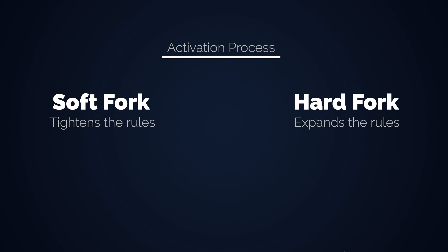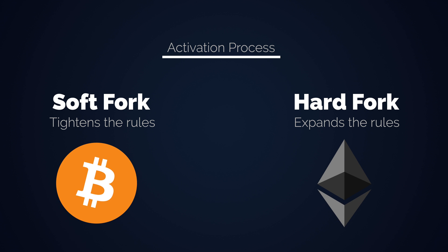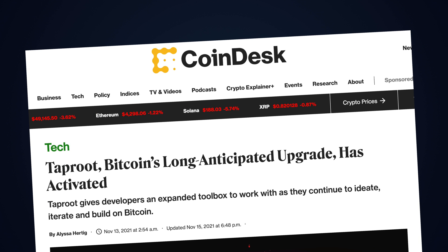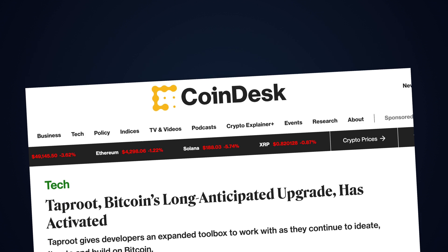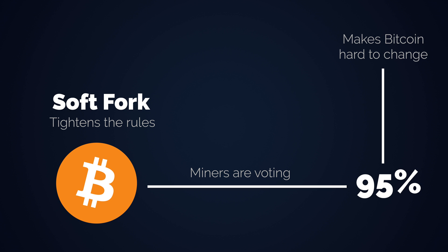Some cryptos, like Ethereum, change on a hardfork basis. Bitcoin changes through softforks. The recent Taproot update was a softfork and Bitcoin's biggest update since SegWit in 2017. To activate a softfork on the network, you don't just need a majority of miners voting for you — you usually need a supermajority of 95%. This makes sure that Bitcoin is hard to change. Some see it as a weakness, but Bitcoin's immutability naturally leads to its robustness. The rules only change if pretty much everyone wants them to change.